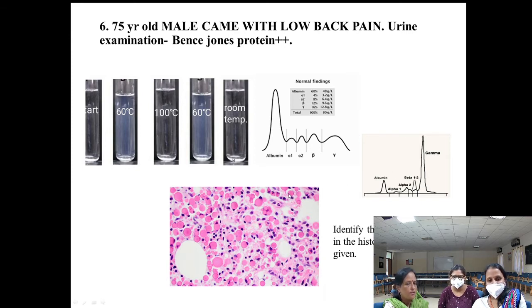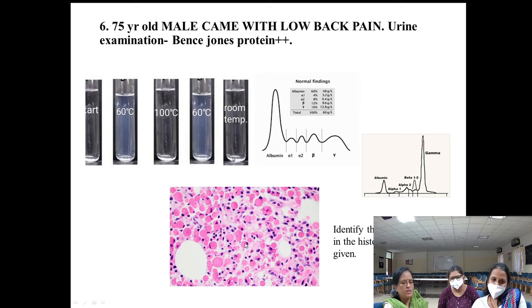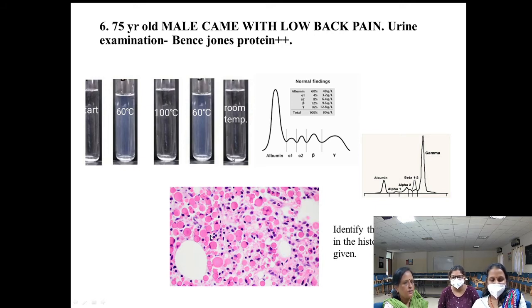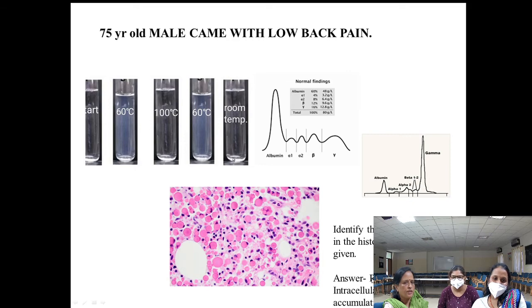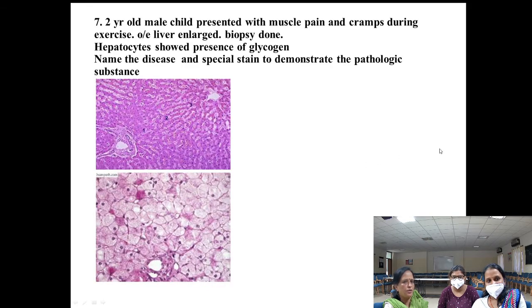This case was used as an example of intracellular hyaline change. Plasma cells produce immunoglobulins; when immunoglobulins accumulate within the plasma cell, they push the nucleus to the periphery — forming Russell bodies. Russell bodies can be extruded and seen extracellularly as well. This illustrates intracellular accumulation and hyaline change.